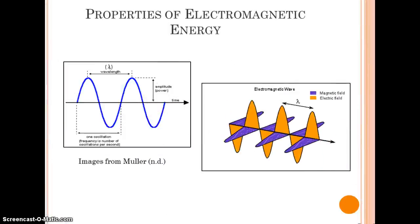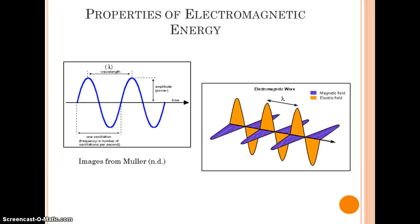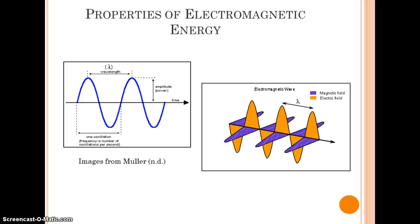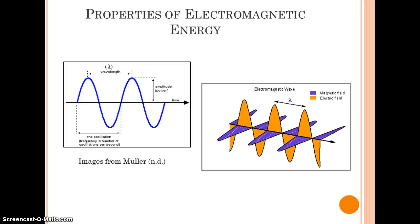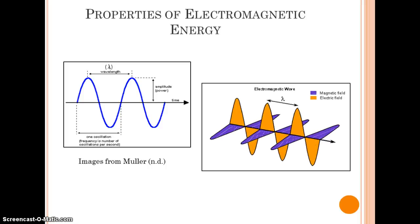Electromagnetic radiation travels at the speed of light and is characterized by three key properties: wavelength, frequency, and amplitude. The wavelength is the distance from one wave crest to the next, and can be reported in common units like centimeters or micrometers. Frequency is measured as the number of crests passing a fixed point in a given time period, and is typically reported in hertz.